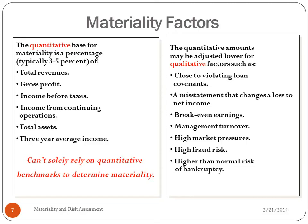You can't rely strictly on those numbers to come up with materiality. You also have to look at whether they're close to violating loan covenants, any misstatements that change a net loss to net income, income smoothing, break-even earnings, management turnover, pressure to meet quarterly earnings, high market pressures, high fraud risks, high-cash situations, and whether there's a higher-than-normal risk of bankruptcy. These all factor into whether to apply a 3% to 5% threshold.